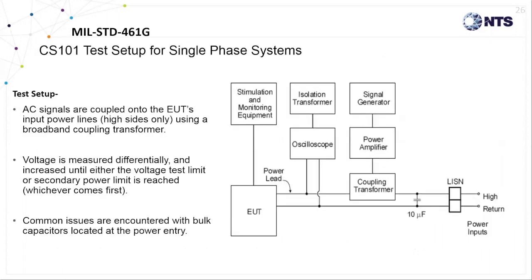During the CS101 test, the coupling transformer is installed on each ungrounded power line separately, and a 10 microfarad cap is placed across those power lines differentially right just before the LISN termination. The caps provide a low impedance path for the CS101 currents to circulate through the EUT in turn protecting the LISNs and the power source from these harmful ripple voltages.